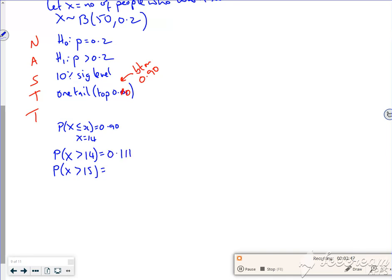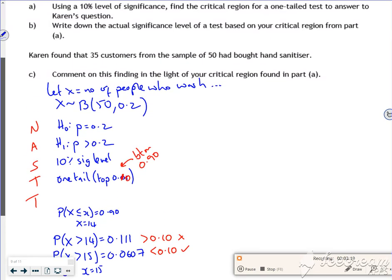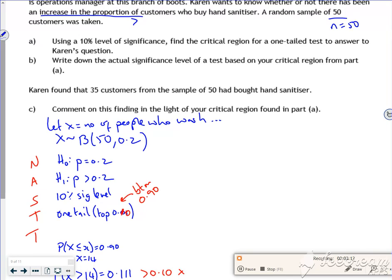Now that gives me 0.111 and that gives me 0.0607. So this one is greater than 0.10, so we can't use that. So I know that my critical value is 15 and my critical region is from 15 all the way up to 50. So I've identified my critical region.